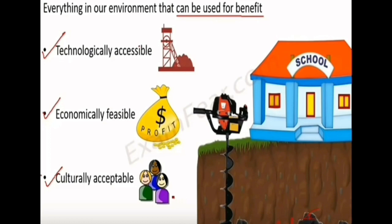The third condition is culturally acceptable. As we can see, the coal lies beneath the school. If we want to extract it, we need to demolish the school. If the people of that particular area allow it, that is called culturally acceptable. If not, it is not culturally acceptable.